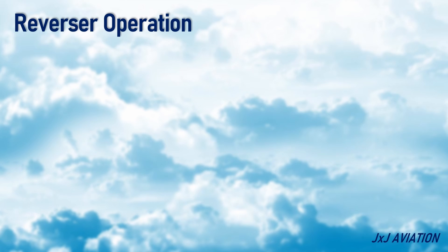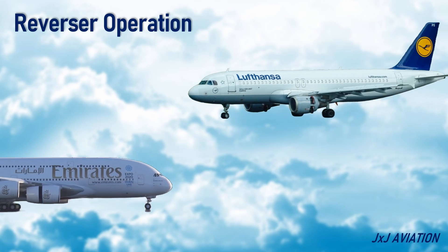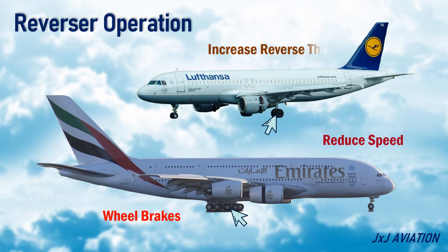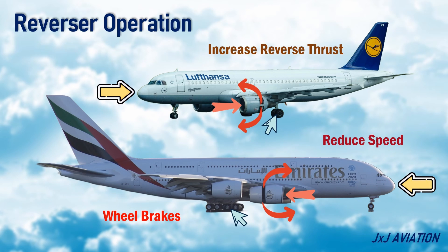Normally, the reversers are used on the ground to reduce the speed of the aircraft, along with the wheel brakes. The reverse thrust can be increased by increasing the thrust on the engine. When the thrust is increased, more air enters the bypass section, so more air is deflected forward, which increases the drag. The cold stream reversers are installed on turbofan engines because they only deflect the bypass air.